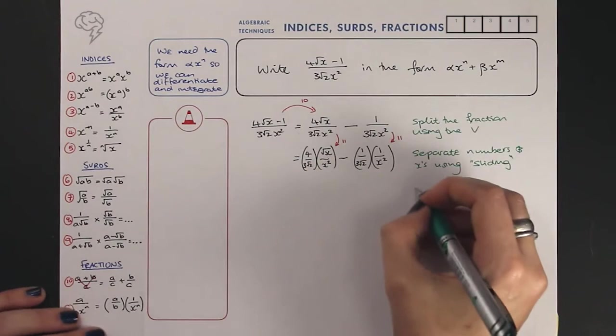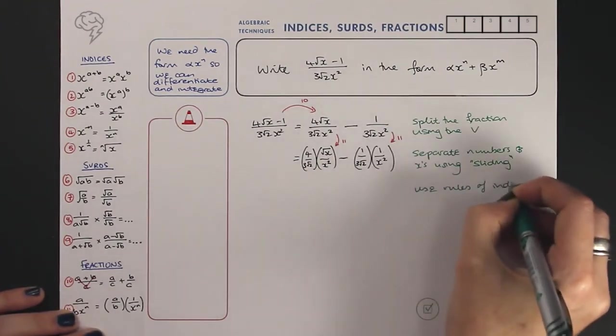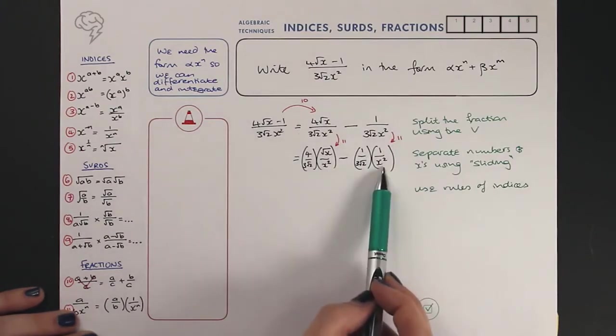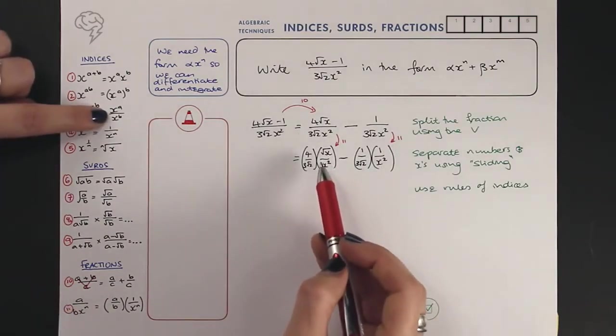Next step is we are going to use the rules of indices, because at the moment we don't have x to the power. We have something that looks like that, something that looks like that. So what do we need to use here? This rule.